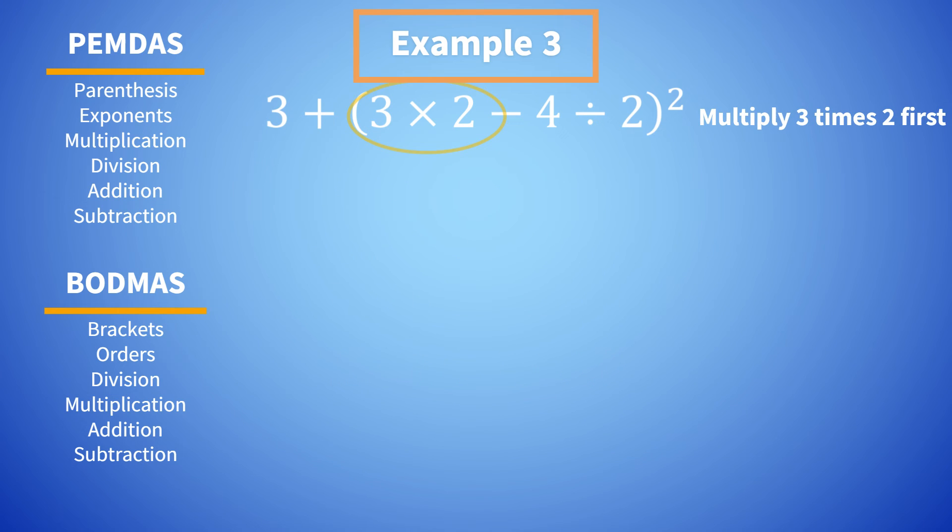Three times two is first. Now we divide four by two. We still have six minus two in the parentheses, which will give us four.